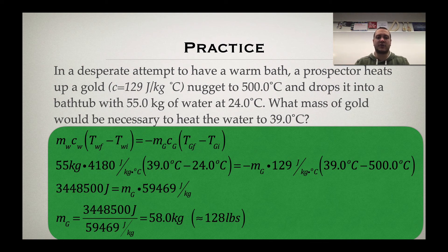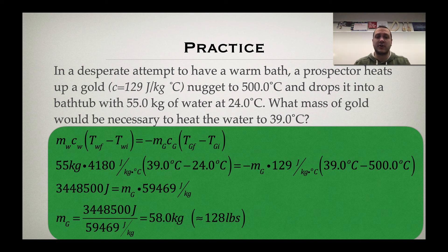Times our change in temperature, which is 39 minus 24 degrees Celsius, giving us a change of 15 degrees Celsius. So we have all the information for the water, and we can find the amount of thermal energy that was gained by the water. And as you can see, it is a very large amount of energy that was gained. On the right-hand side, we have the specific heat and the change in temperature; we are solving for the mass.